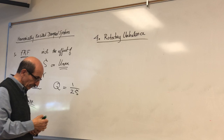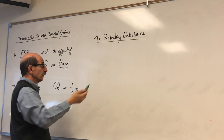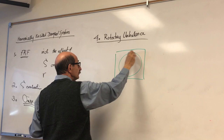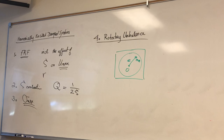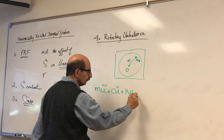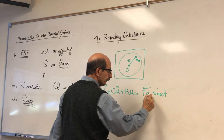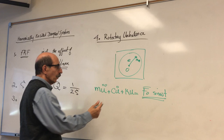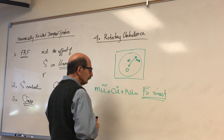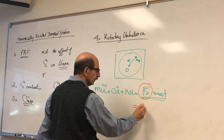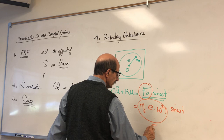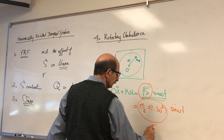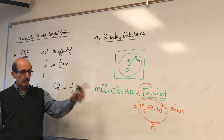Rotating unbalance is a special case of harmonic load. If you have a rotating unbalance — a tiny eccentric mass rotating at a distance e from the center of rotation — we demonstrated that the equation of motion is similar to the case of a regular harmonic load. However, the big difference is in F0, the amplitude, which was M_e times e times omega squared times sine(omega t).